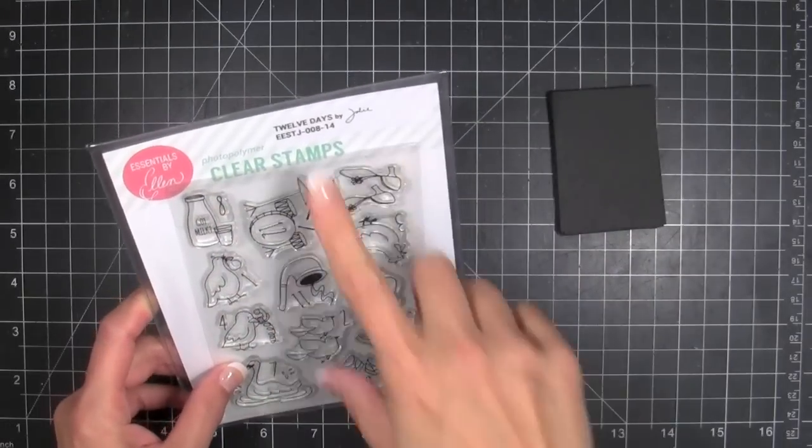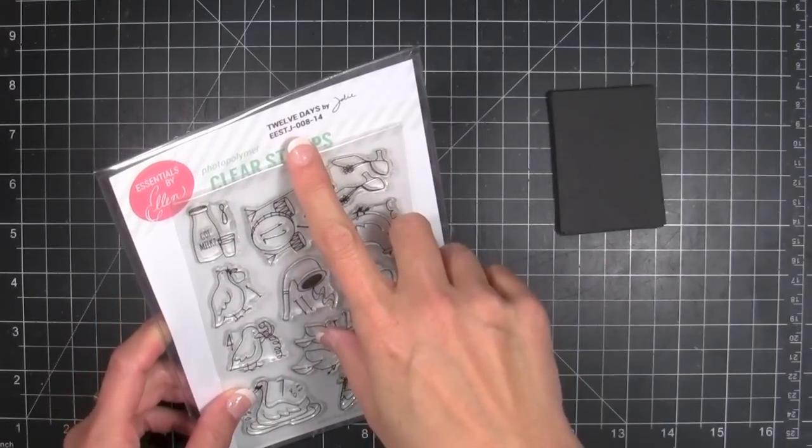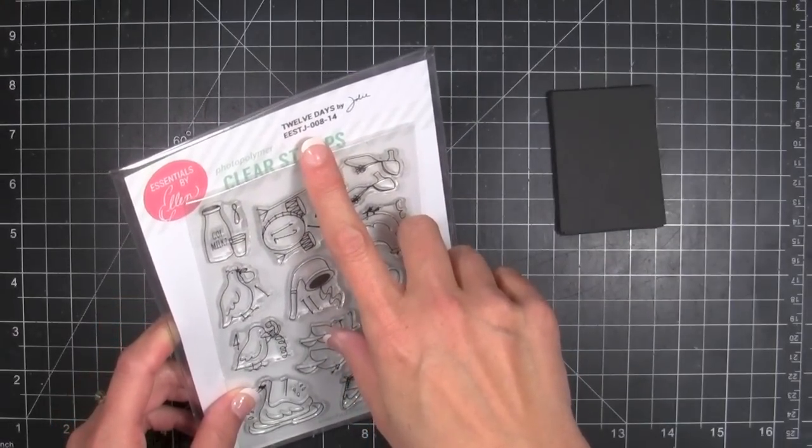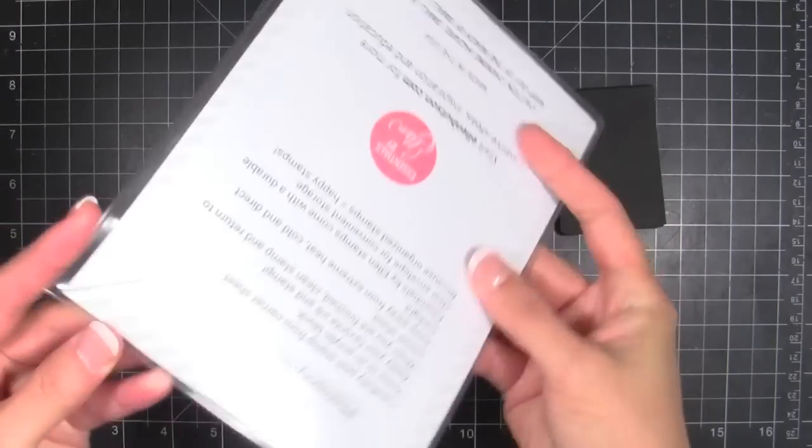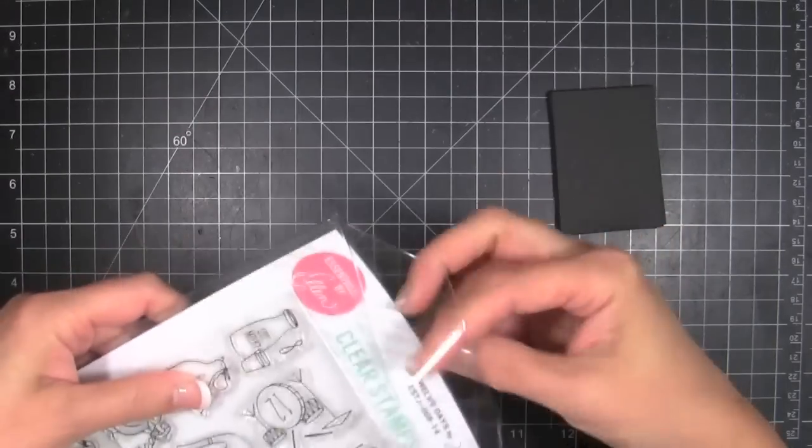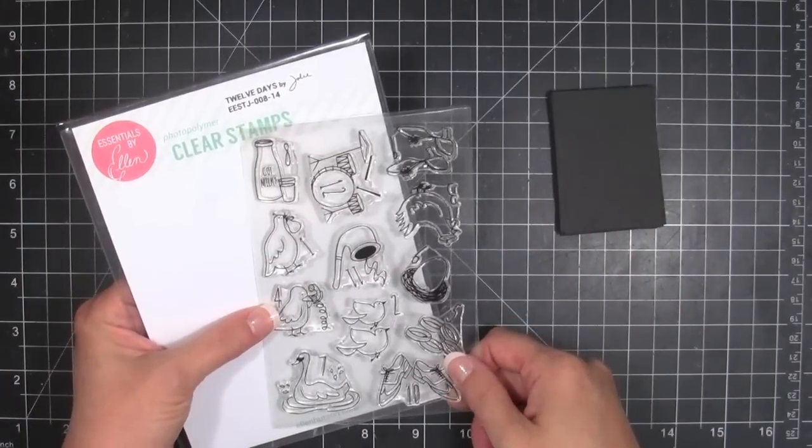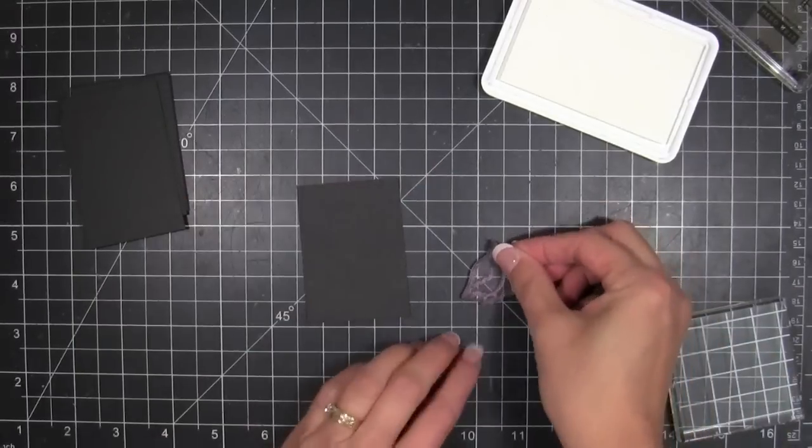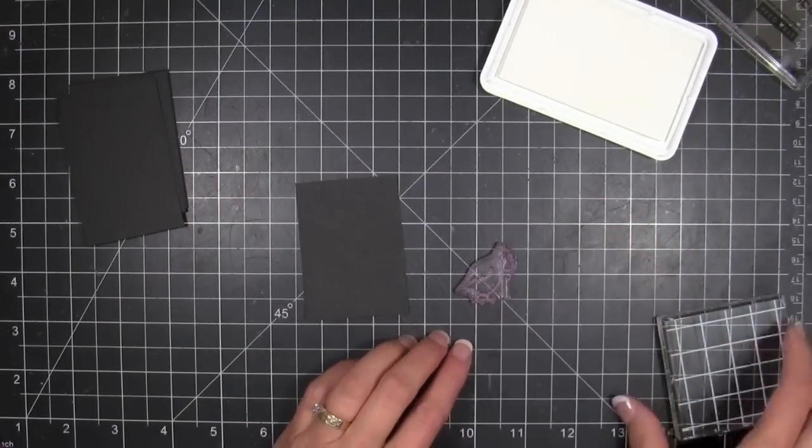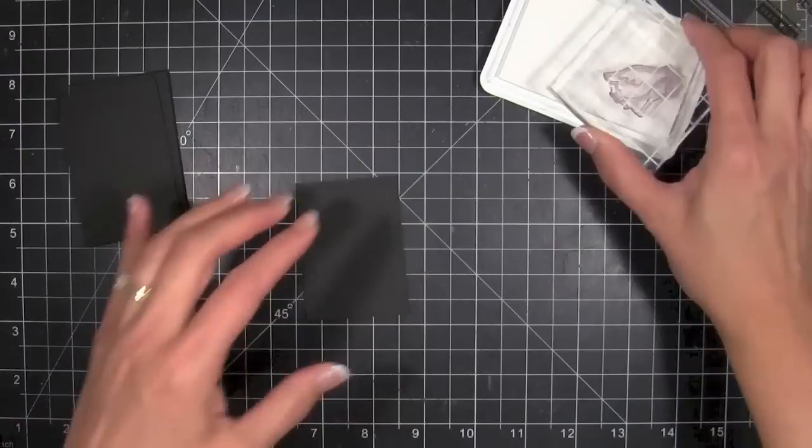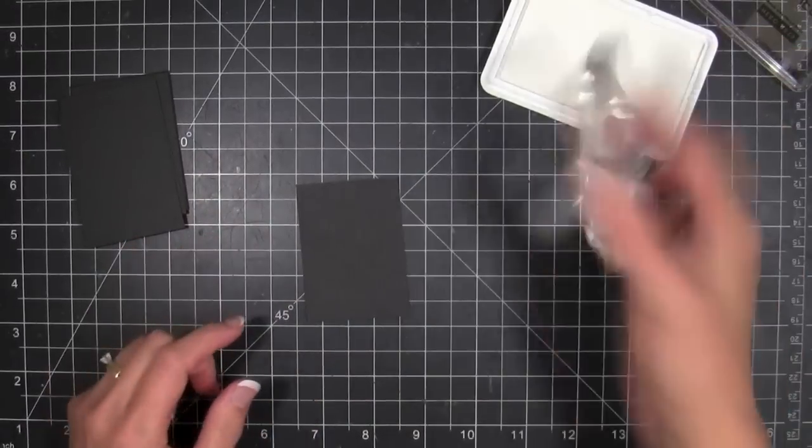I thought it'd be fun to modify it and do something using the 12-day stamp set. All the stamp sets in the Essentials by Ellen collection come in a really awesome durable clear pouch for easy storage and organization, and they're indexed on the top right corner of the backer sheet so you know exactly what stamp set you're working with.